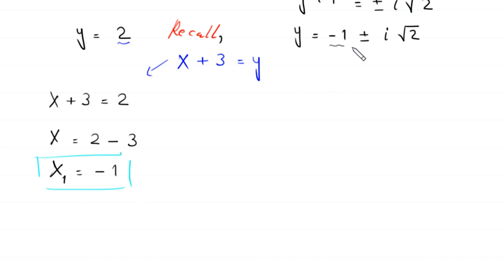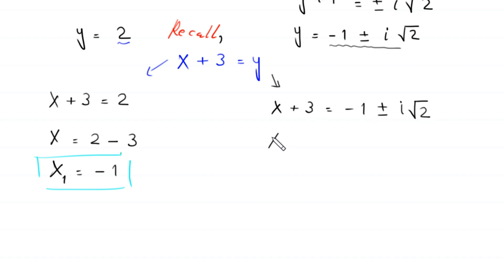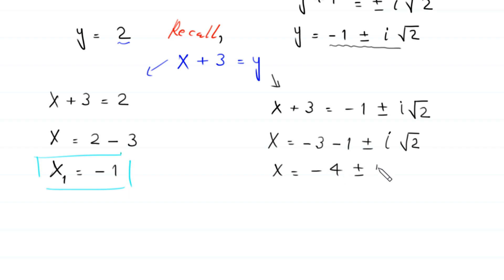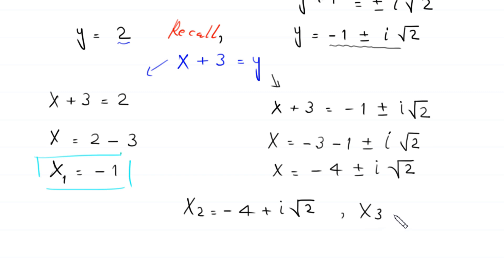When y = -1 ± i√2, substituting back gives x+3 = -1 ± i√2, so x = -3 + (-1 ± i√2) = -4 ± i√2. We thus have three solutions: x = -1, x = -4 + i√2, and x = -4 - i√2.